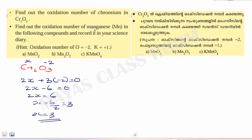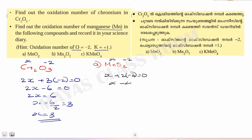Find the oxidation number of manganese. For MnO₂: x is the manganese oxidation number, oxygen is minus 2. So x + 2(−2) = 0, then x − 4 = 0, and x = 4. The oxidation number of manganese in MnO₂ is +4.